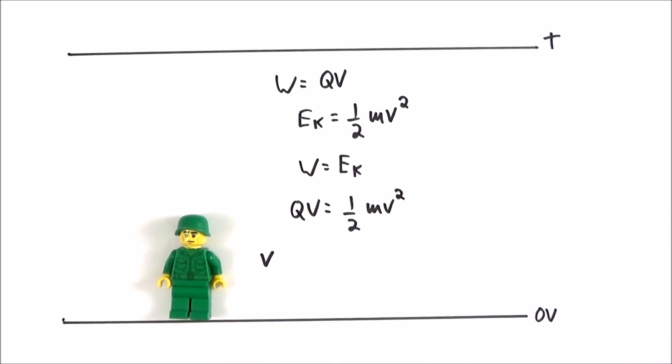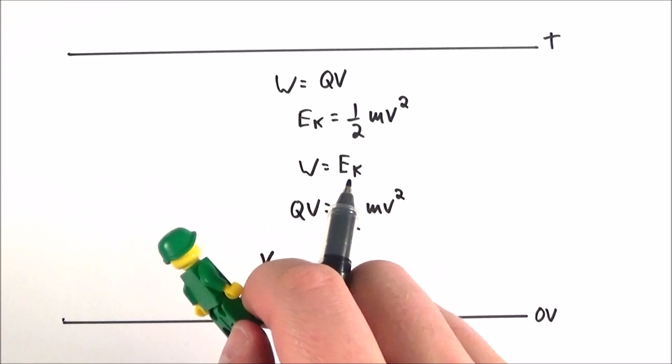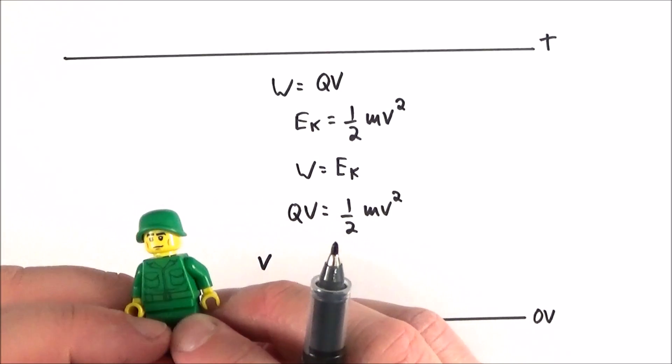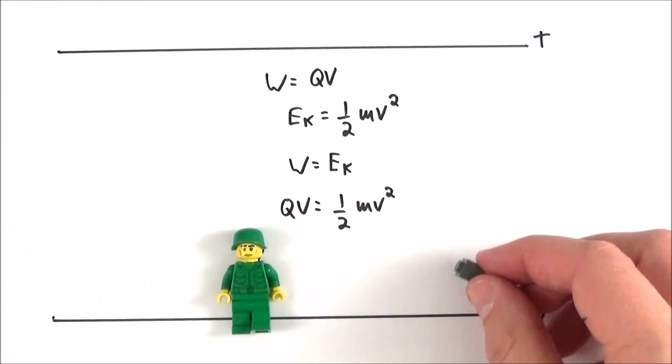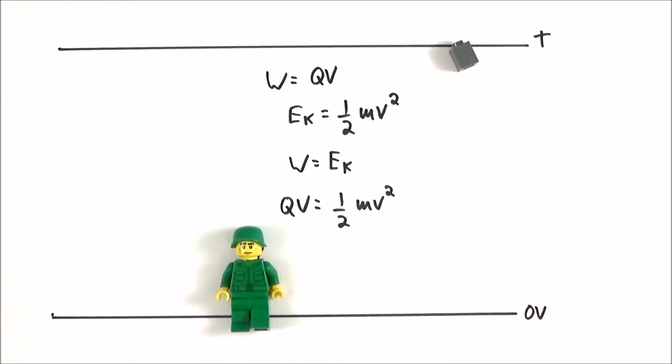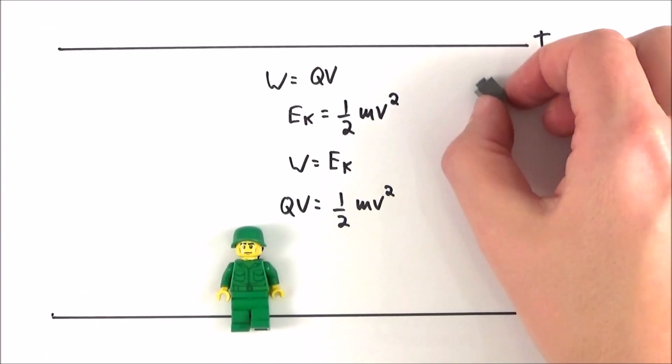What does that mean? Well, if maybe rather than having something which is just a unit charge, if we had maybe an electron, so here we have an electron which has the opposite charge. This wants to be attracted to the positive end. So we can do work on the electron, move it away, and as soon as we let it go, if it's free to move, it's going to accelerate towards the positive plate.